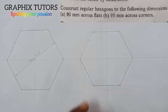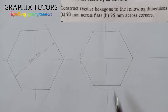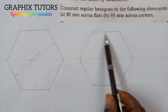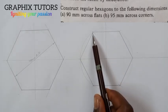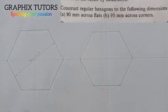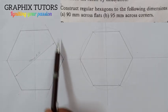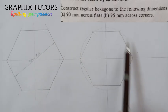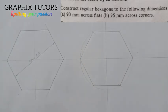This is the across corner hexagon. What do you notice? The sides are not touching the circumference — what is touching the circumference are the corners. In across flat, the sides touch the circumference. In across corner, the corners of the hexagon touch the circumference of the circle, meaning from one corner to the other corner is 95 millimeters.